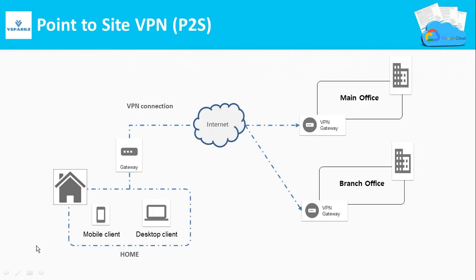Point-to-site VPN is represented as P2S. A point-to-site VPN connection lets you create a secure connection to your remote network from an individual device. The connection is established by starting it from the individual device — the devices can be a mobile, desktop, and so on.